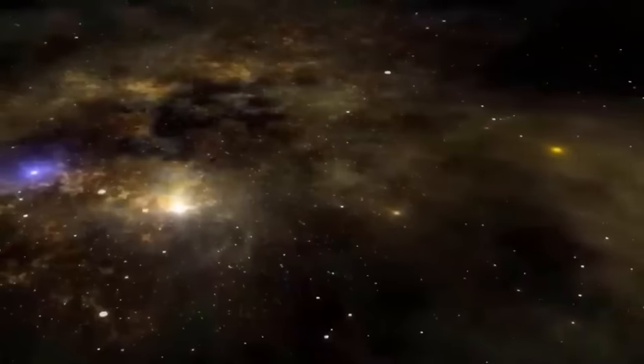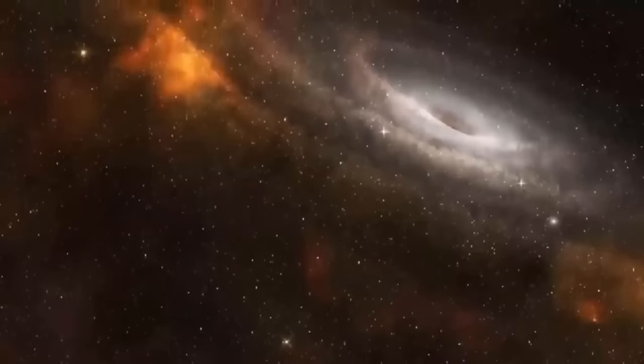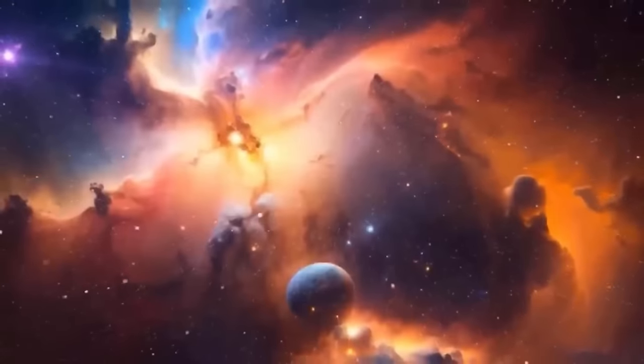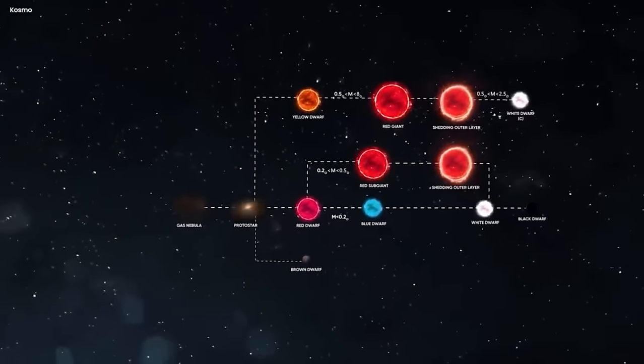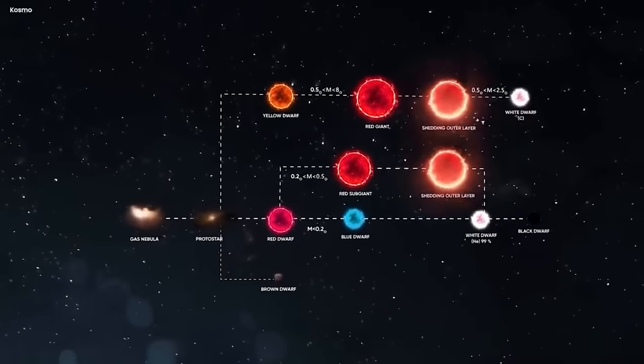Historically, the designations Alpha Orionis and Beta Orionis were assigned to Betelgeuse and Rigel, respectively, in Johann Bayer's Uranometria published in 1603. This categorization helped astronomers and stargazers identify and differentiate between stars in the Orion constellation.